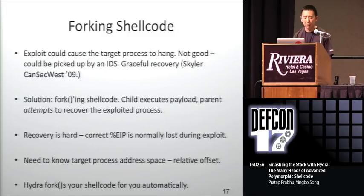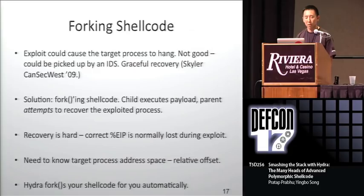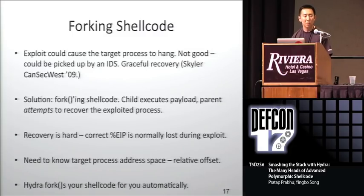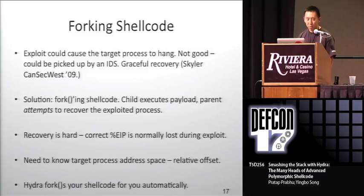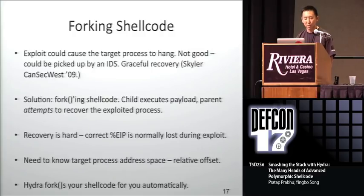Forking shellcode is something that just got recent attention at CanSecWest — some people from Immunity Inc. presented a talk on this. We did this at the exact same time without knowing they were also working on it. Basically, you have an exploit and a target process. You exploit that target process via a stack overflow, and what happens is the target process will crash. What you want is for that process to keep going and simultaneously have your exploit execute, because if the process crashes or starts doing weird things, that might alert a sysadmin or an IDS sensor. The solution is that Hydra adds forking features to your shellcode: once the shellcode executes, it immediately forks. The child executes the payload and the parent attempts to recover the exploited process — it tries to repair the stack and figure out the right return address so the parent can go back to normal execution.